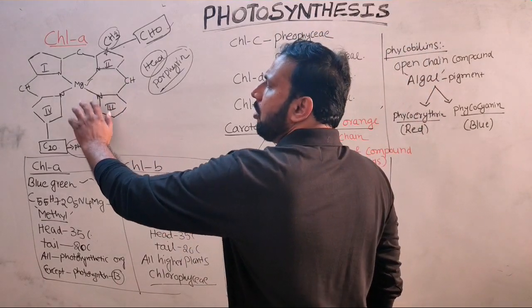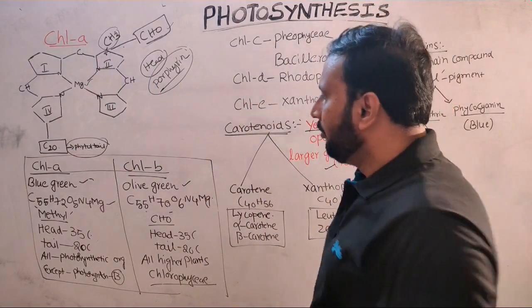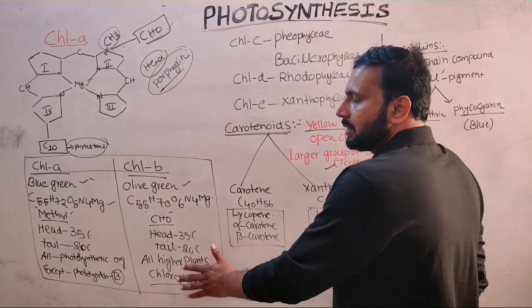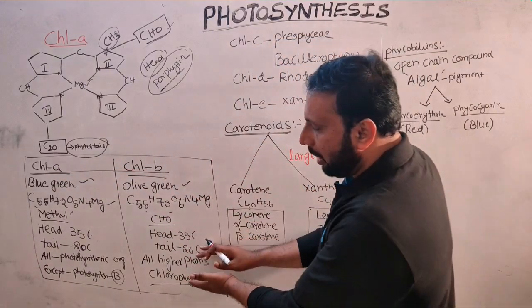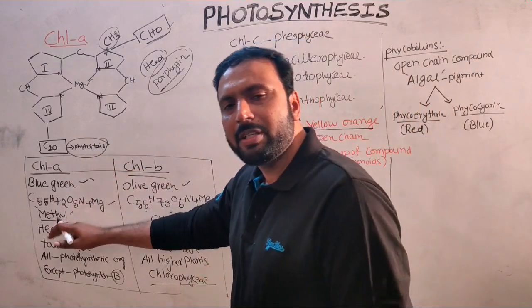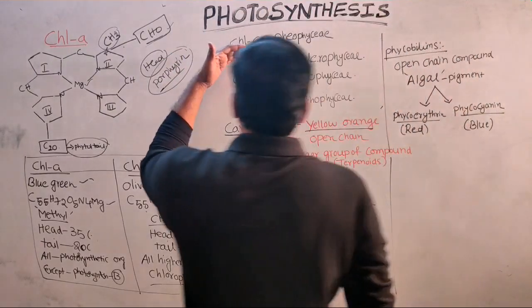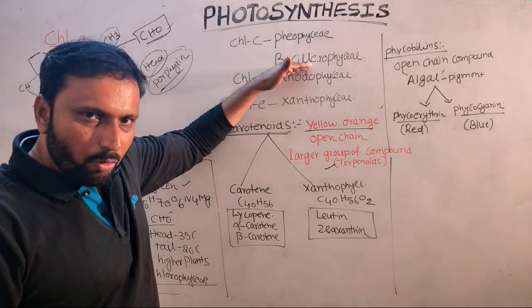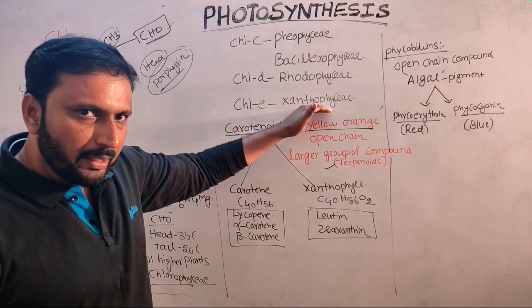Chlorophyll a is present in all photosynthetic organisms except photosynthetic bacteria. Chlorophyll b is present in all higher plants and in green algae. Chlorophyll c is present in Phaeophyceae (brown algae), and chlorophyll d is present in Xanthophyte algae.